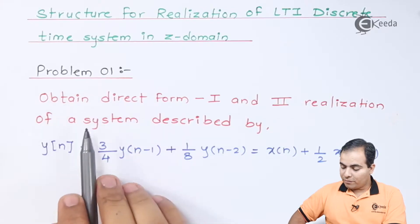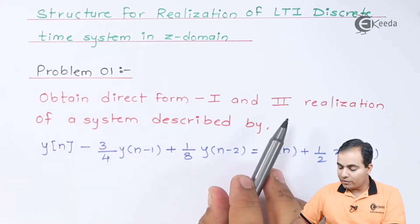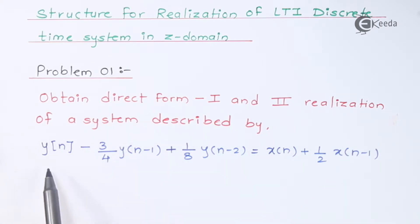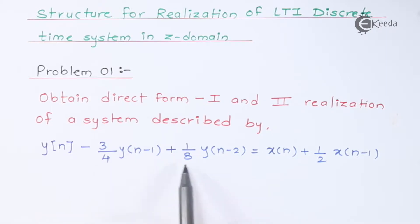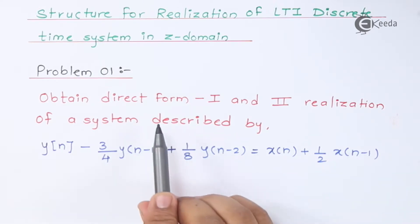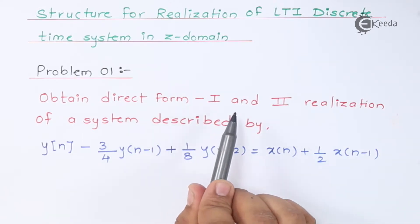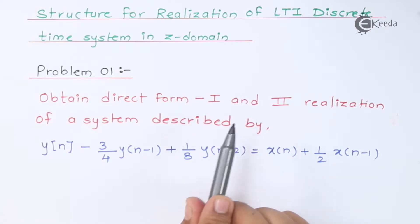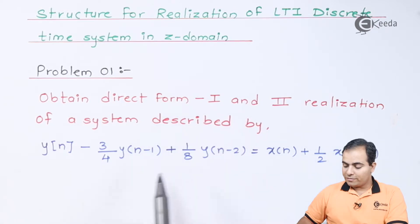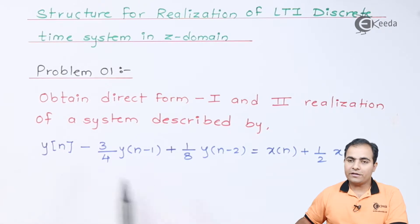Problem 1: Obtain a Direct Form 1 and Direct Form 2 realization of a system described by the difference equation: y(n) minus 3/4 y(n-1) plus 1/8 y(n-2) equals x(n) plus half of x(n-1). To get Direct Form 1 and Direct Form 2, we first need to obtain the transfer function.